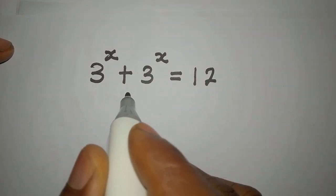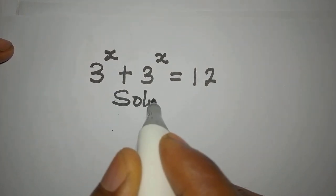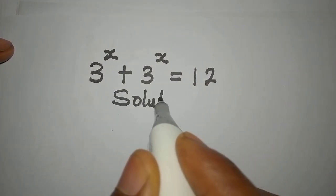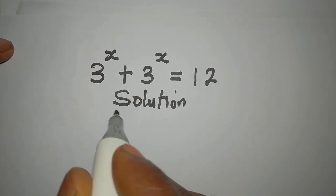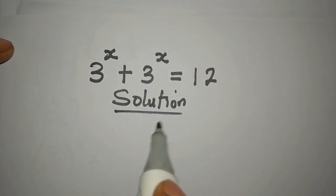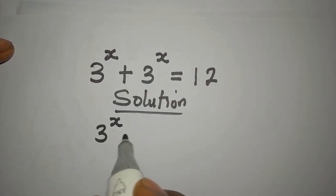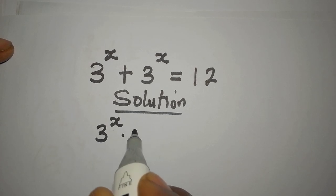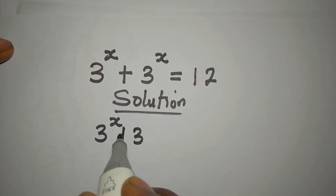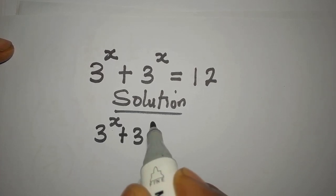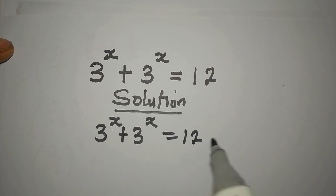Hello everyone, welcome to Fucco Mathematics. Here we have 3 to the power of x multiplied by 3, and we are adding plus 3 to the power of x equals 12.